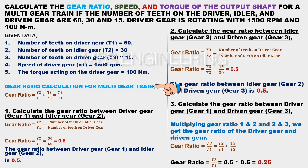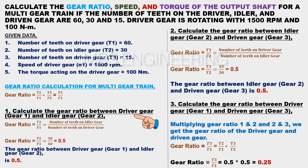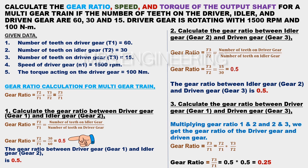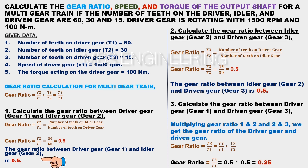Gear ratio calculation for multi-gear trains: Gear ratio equals T2 divided by T1, and the obtained value multiplied by T3 divided by T2, so the gear ratio equals T3 divided by T1. First, we calculate the gear ratio between the driver gear (gear 1) and idler gear (gear 2). The gear ratio equals T2 divided by T1, which is 30 divided by 60, giving a gear ratio of 0.5. Therefore, the gear ratio between the driver gear and idler gear is 0.5.